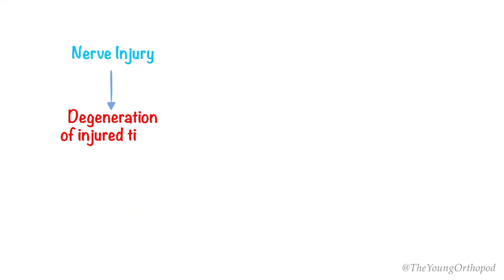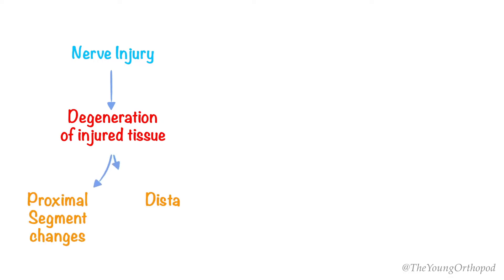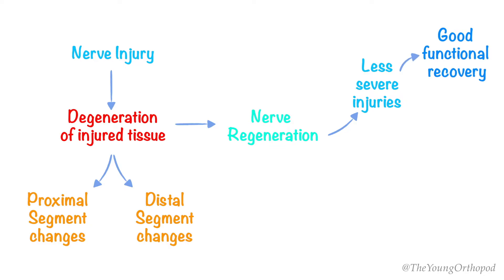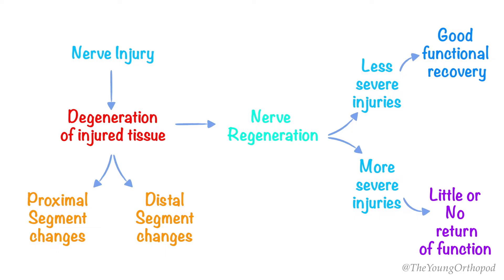When a nerve is disrupted, the cut ends retract due to elasticity of the endoneurium, and different changes are seen in the proximal and the distal segment. After a peripheral nerve is injured, a coordinated sequence of events occurs to remove the damaged tissue that ultimately initiates the regenerative process.